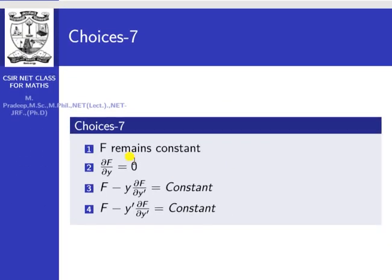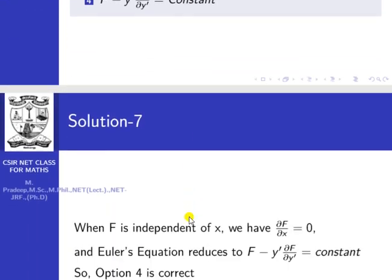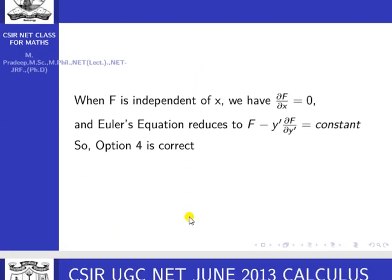Since F is independent of x, the Euler equation reduces to F minus y-dash into ∂F/∂y-dash equals constant. So option four is correct.